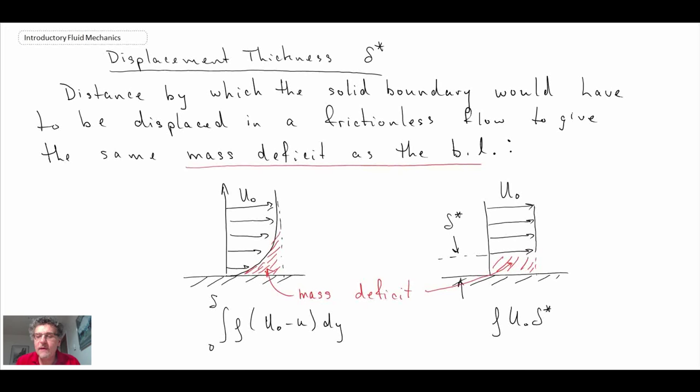What we can see is that this is the mass deficit in this region here where we have lower velocity due to the presence of the boundary layer. We would need to increase the body thickness by this amount, delta star, in order to match that mass deficit. It's basically a thickening of a body due to the boundary layer, and outside of that we would just have the free stream velocity.